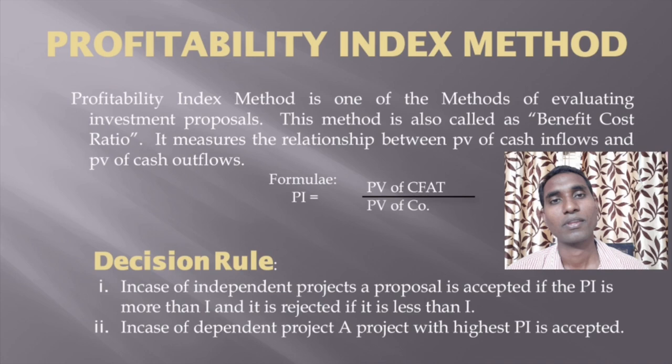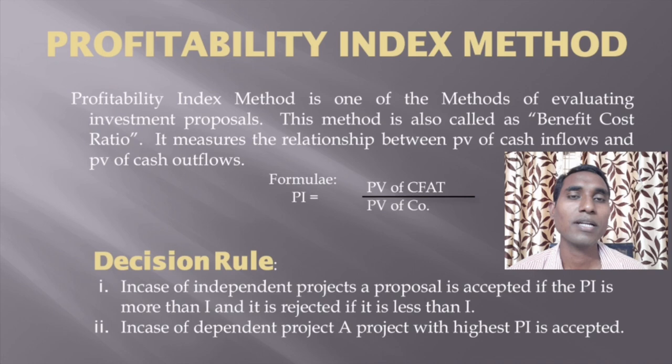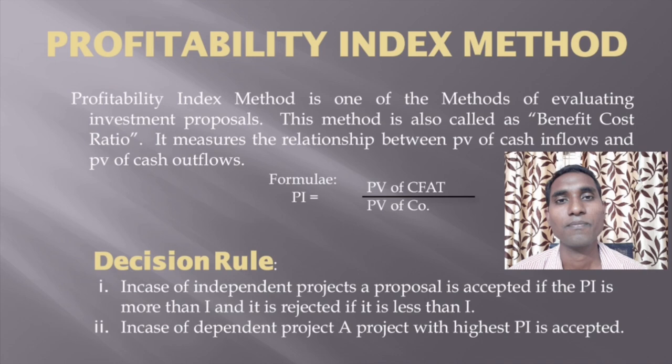Before we do that, let us brush up what we have done till last session. We were doing problems on NPV — net present value method — that is the first method under modern techniques of capital budgeting. We have divided the capital budgeting techniques into two categories: traditional methods and discounted or modern methods. We have recently completed the net present value method and we are heading towards the second method, that is the profitability index method.